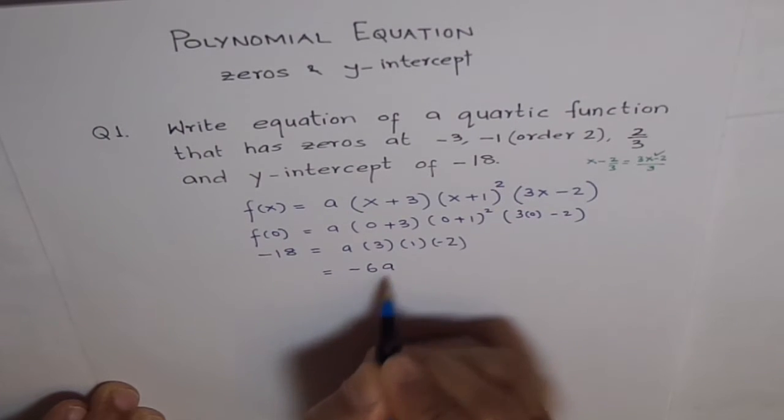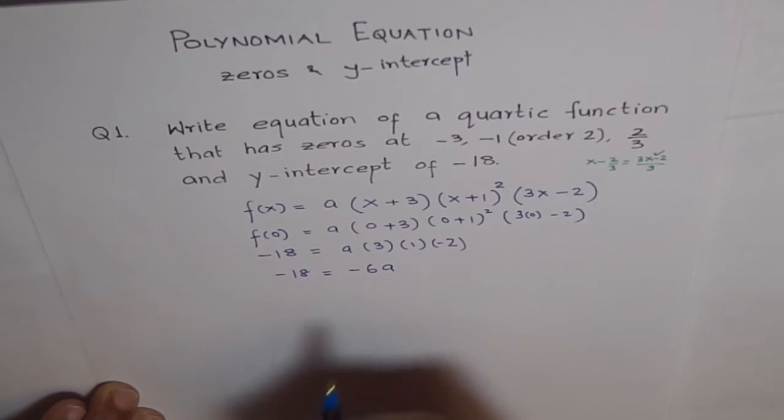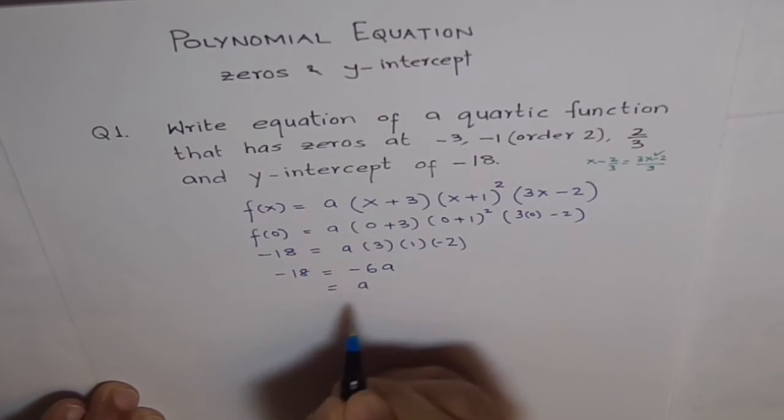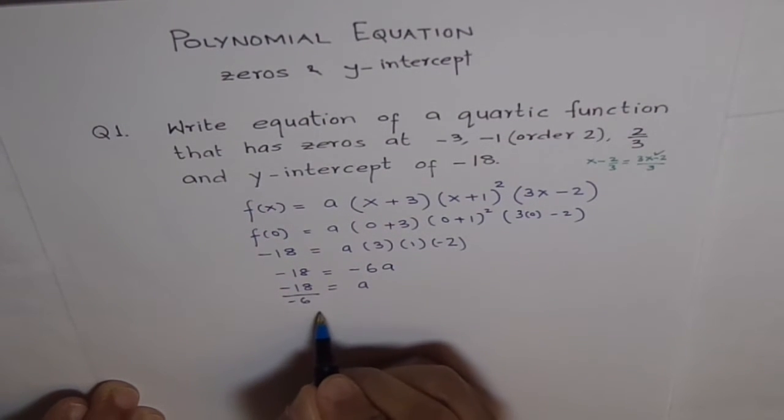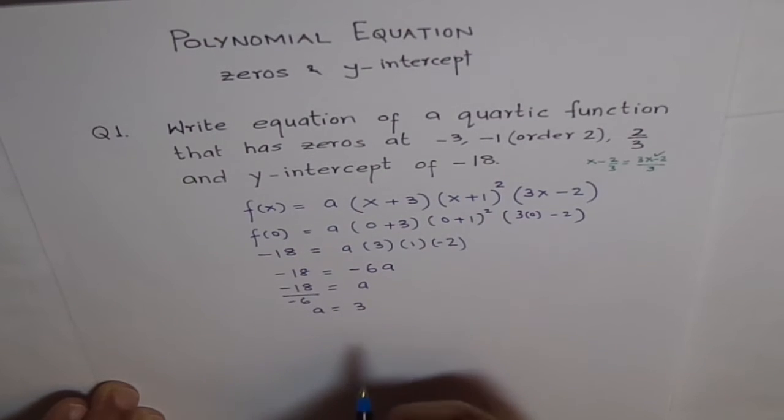Minus 6A equals minus 18. So, what is A equals to? A equals minus 18 divided by minus 6. So, we get A equals 3.